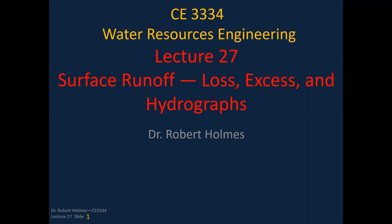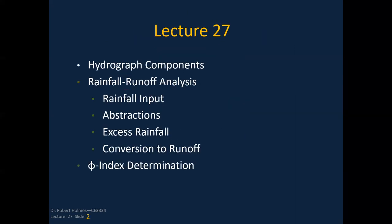This is lecture 27. We're going to be talking about surface runoff aspects in terms of loss, excess, and hydrographs. I'm going to talk about hydrograph components and look at rainfall-runoff analysis. We're specifically going to look at the phi index, which is essentially a constant value of infiltration — as opposed to the Green-Ampt method, Horton model, or NRCS runoff model. That constant value of infiltration rate is called the phi value or phi index value.